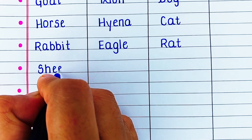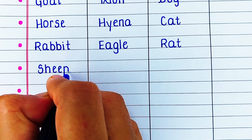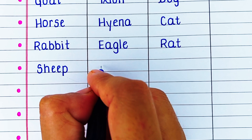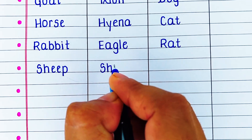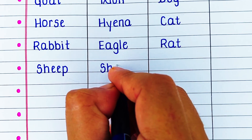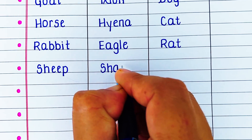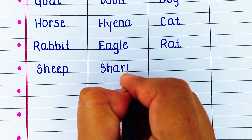Next herbivore in our list is sheep. Carnivore is shark.